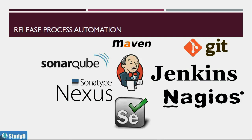Alongside Jenkins, we will also learn Git, Maven, SonarQube for code quality analysis, SonarType Nexus for build version controlling, Selenium as a testing tool, and Nagios for monitoring software.